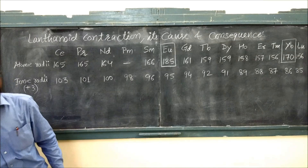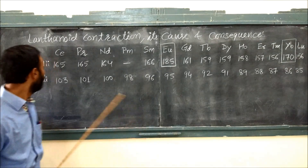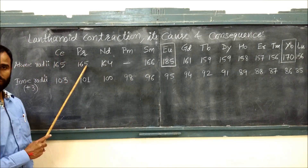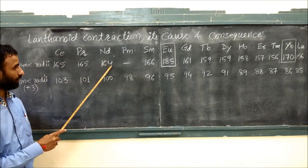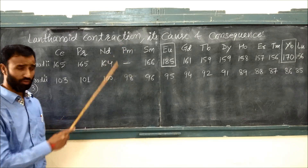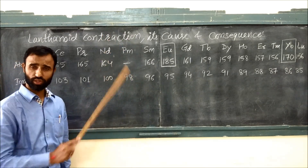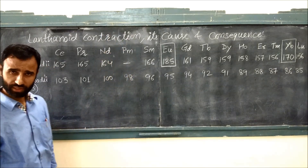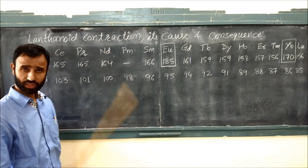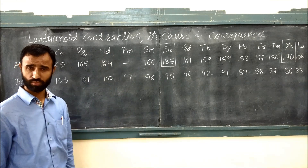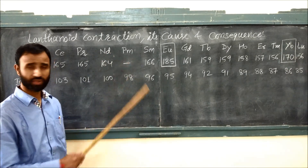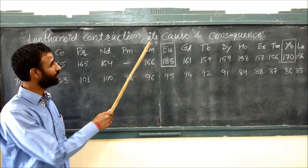You can see from cerium, praseodymium, neodymium, promethium — promethium is a synthetic element, so little is known about its atomic radii, that is why it is not mentioned here.